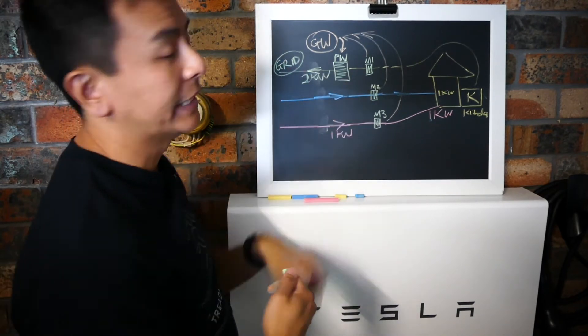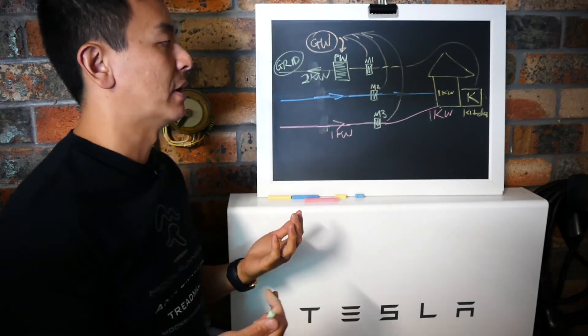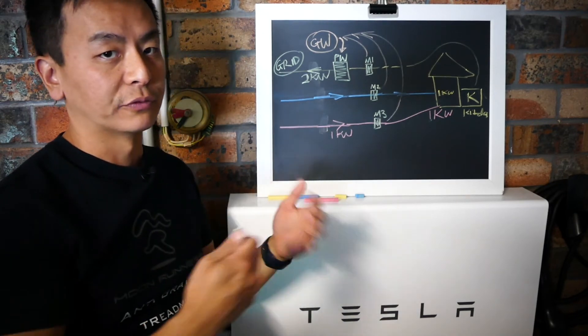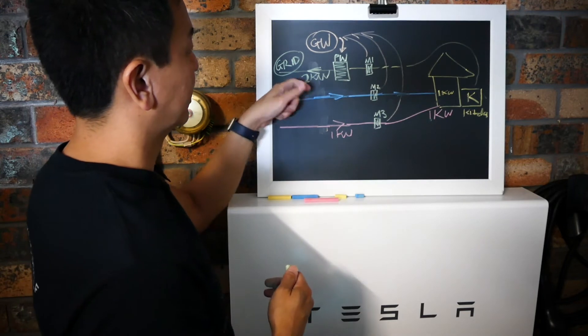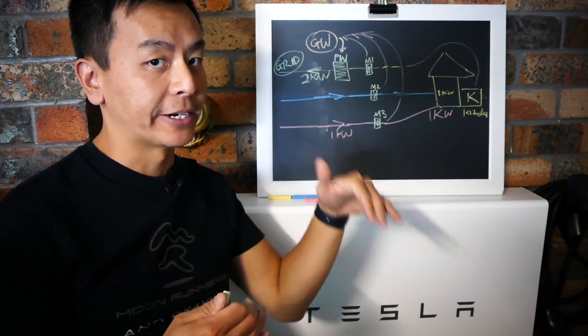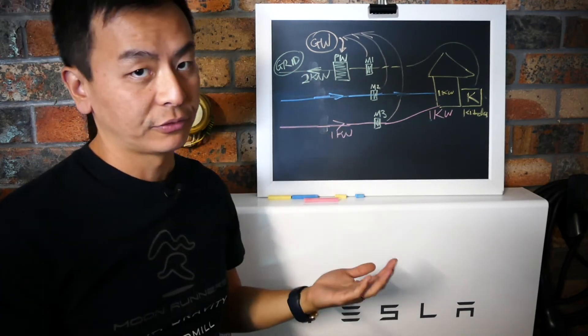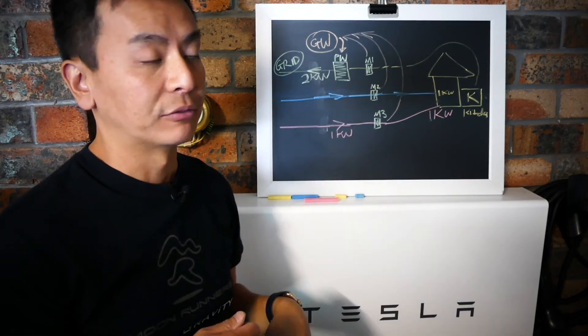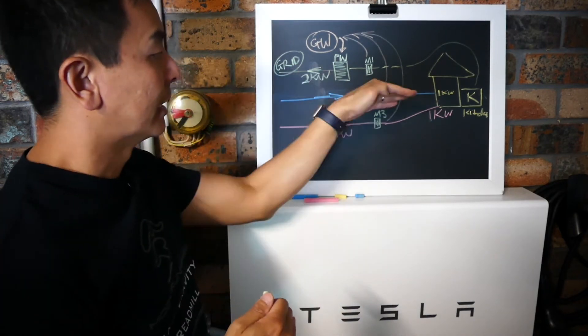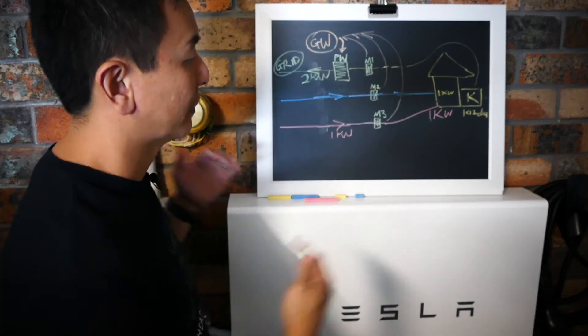I used to think that it fed back at a feed-in tariff, but that's been confirmed by my installer and also from the different forums I've read online that it discharges at the same rate at the current tariff you're paying. So you don't actually get ripped off because it's giving it feed-in tariff, like a solar feed-in tariff rate, which is much lower than the current rate that you're being charged, if that makes sense.